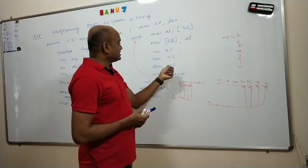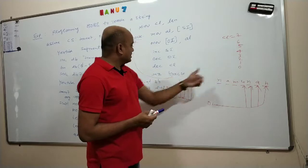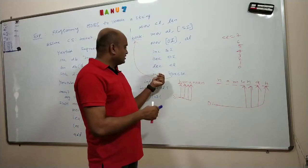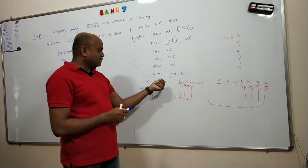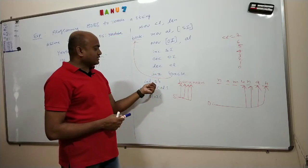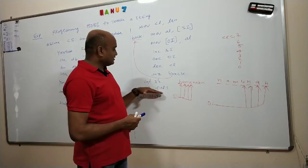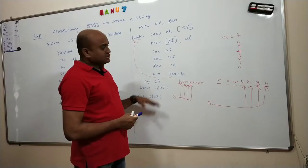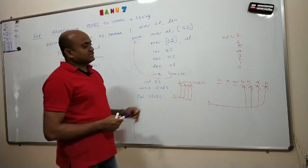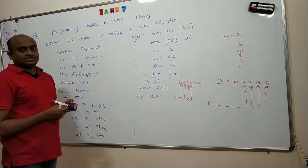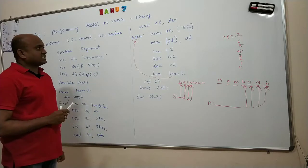But after coming to this value, that is after decrementing CL from 1 to 0, it will check jump if not zero. No, condition is not satisfied. There is a zero. It will not go back. It will come out of the loop and it will stop the program. INT 3H is breakpoint interrupt. It will stop executing the program and it will end the code sequence. So this is how we will get string reversed. This is the program to reverse a given string.